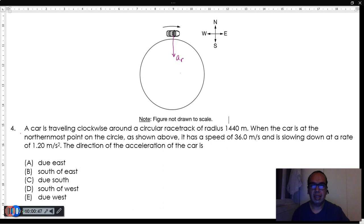to the east and the car is slowing down, the tangential component of the acceleration must be this way. Therefore,